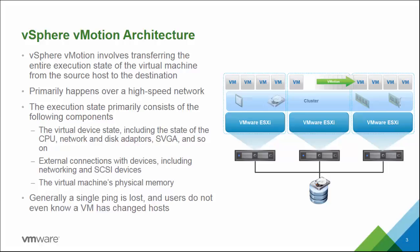vMotion involves transferring the entire execution state of a virtual machine from one host to another while it's running live, over a high-speed vMotion network. The execution state encompasses everything it takes to run the VM: its virtual device state including the state of its CPU, network, disk adapters, VGA, connectivity with external devices including networking and SCSI devices, and the virtual machine's physical memory. The biggest challenge is the physical memory, since those other services are logically associated through configuration files, so keeping the application running so a user doesn't lose connectivity is the key concern.